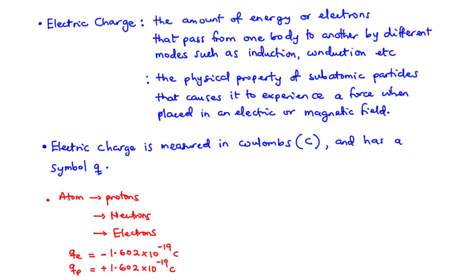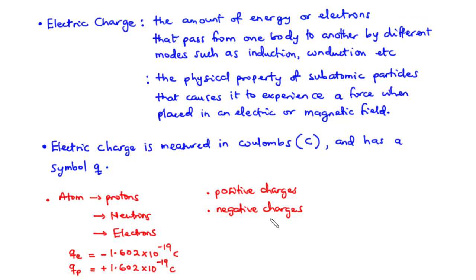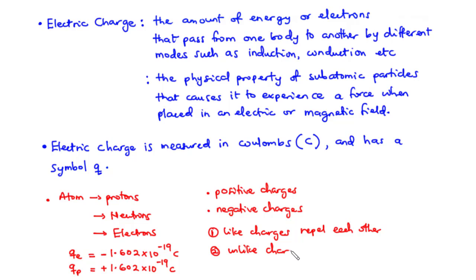We are also able to realize that two types of charges occur naturally: positive charges and negative charges. We also know that like charges repel each other, and unlike charges attract each other.